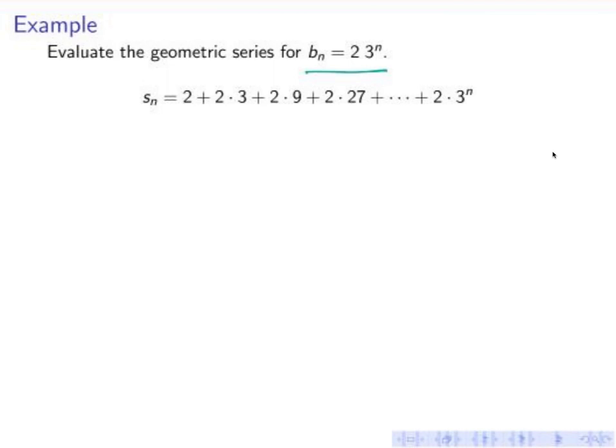But instead of computing this long sum, I would like to use the formula. So S_n is 2 times 1 minus 3 to the n plus 1 divided by 1 minus 3. This is exactly the formula I just derived earlier.